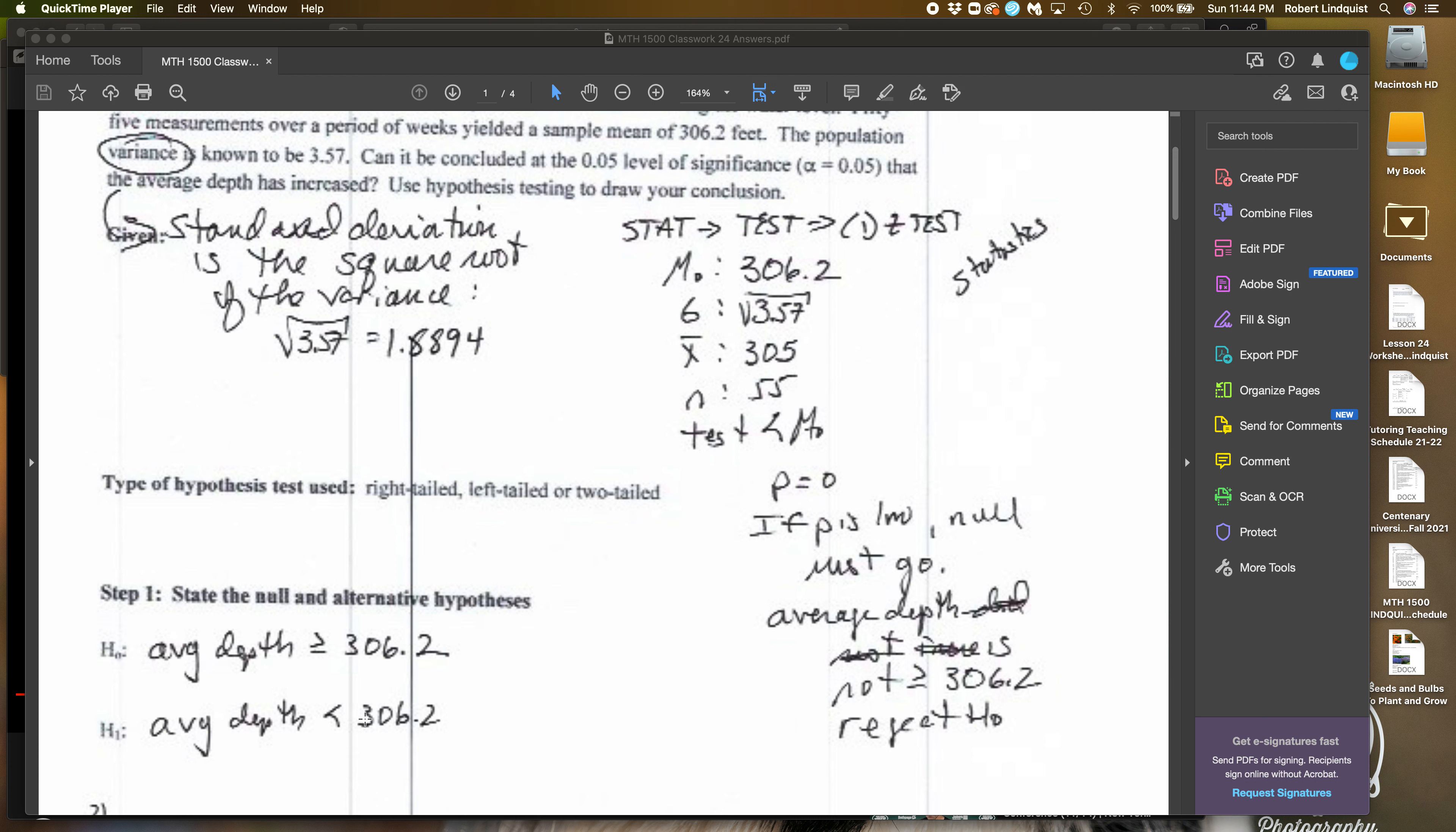I usually like to go to the draw button so I can see the graph at the same time. But you can do calculate. And in this case, it'll tell you that P is 0. So remember the saying, if P is low, the null must go. So therefore, you reject the null hypothesis. And it is not the case that the average depth has increased to greater than or equal to 306.2.